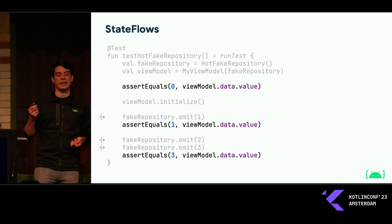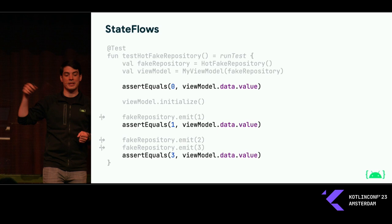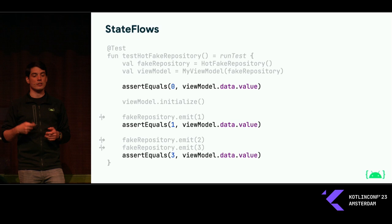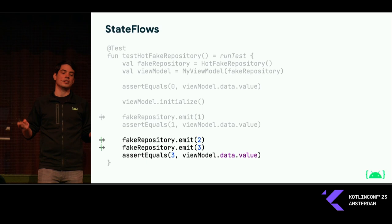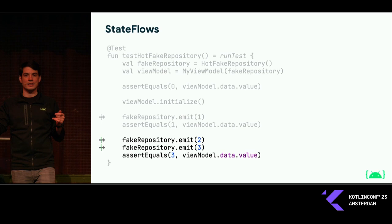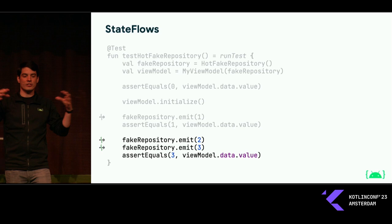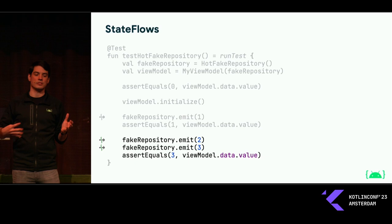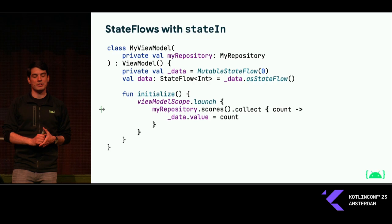Something important: I keep asserting on the current value of the state flow instead of collecting it as a flow. Our recommendation is to treat state flows as state holders in your tests, wherever you can, and control the work that makes changes to that state flow so you can keep asserting on the value property instead of having to collect it. Especially because state flows have a behavior where if they receive values quickly in rapid succession, you might not observe all of those intermediate values if you're collecting from it — whether you see all intermediate values depends on how the producing and consuming coroutines are set up and how fast they are in scheduling. So instead of worrying about conflation, we recommend just asserting on the value.